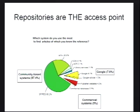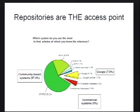This is essentially the same slide, but this question asks which system you use most to find articles for which you know the reference — in other words, I know what I'm looking for, where do I go to find it? Publisher websites now start to appear, but if I have a reference in front of me and know where it's published, I still go to Spires. That's how the high-energy physics community works. This may not be how the chemistry community works, but this is a reason why the HEP community is ripe for this sort of movement — we're used to doing things using community-based systems.